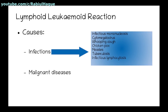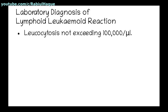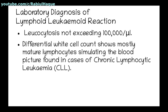How can we diagnose a case of lymphoid leukemoid reaction? There will be leukocytosis; however, it will not exceed 100,000 per microliter. The differential count of white blood cells will show mostly mature lymphocytes, simulating the blood picture found in cases of chronic lymphocytic leukemia.